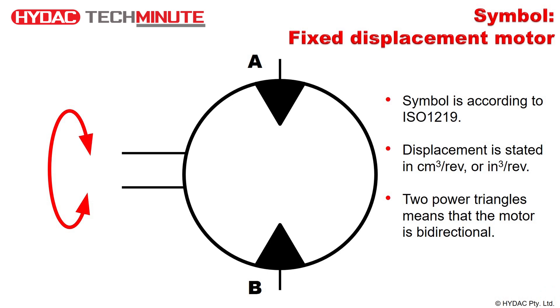An energy triangle pointing in the opposite direction shows that the motor can accept flow from either of the ports, giving us the ability to have a bidirectional shaft output.